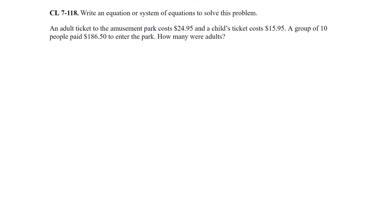Question 118: An adult ticket costs $24.95 and a child ticket costs $15.95. A group of 10 people paid $186.50. How many were adults? Let A equal the number of adult tickets and C equal the number of children's tickets. We write two equations: A plus C equals 10, and 24.95A plus 15.95C equals 186.50.